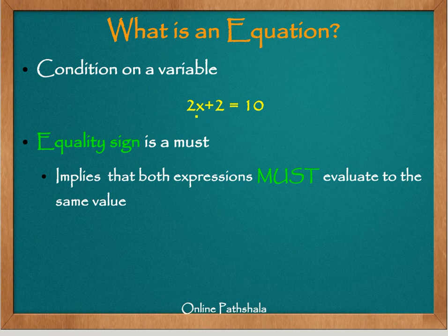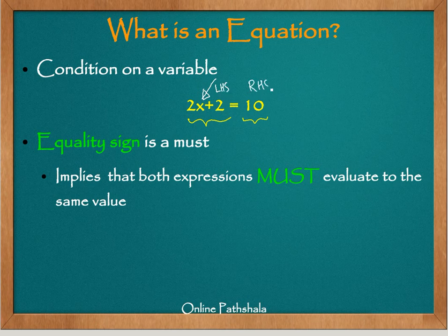And here is an example. So we have 2x plus 2 equals 10. Now what this equation simply says is that the value of x must be such that this expression, this whole expression which is present on this side, and as you know that we can call this as a left-hand side and this can be called as the right-hand side, this expression must evaluate to a value of 10. So this is what we mean by condition on a variable.